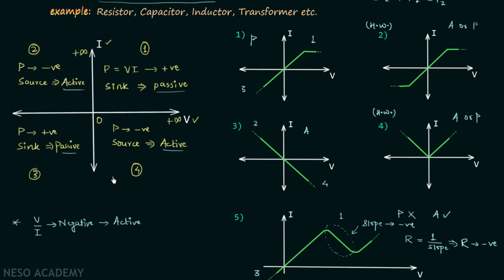So according to the V/I ratio rule the element appears passive, but in reality it is active. This rule fails when we have negative resistance in the first or third quadrant. That is all for this lecture — solve the two homework problems, and see you in the next one.